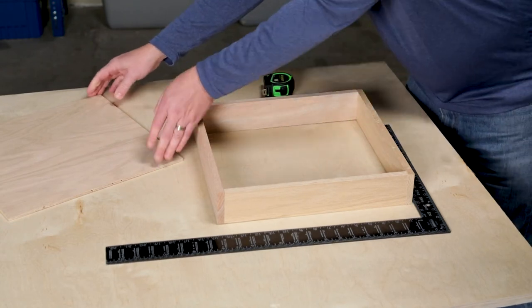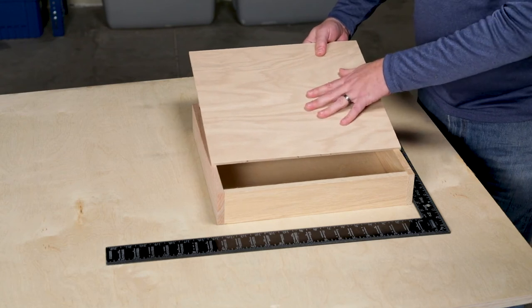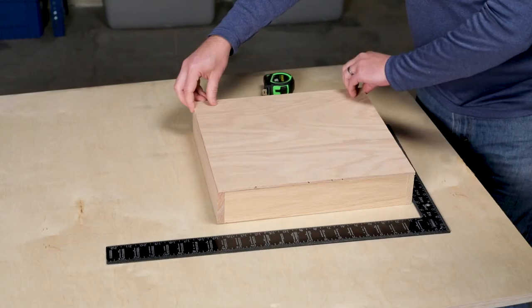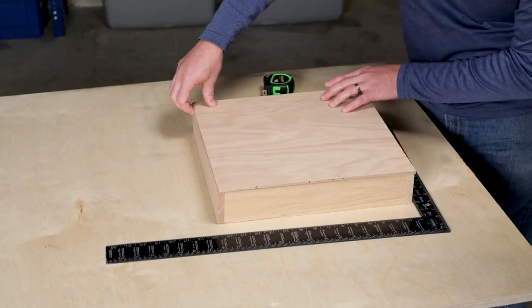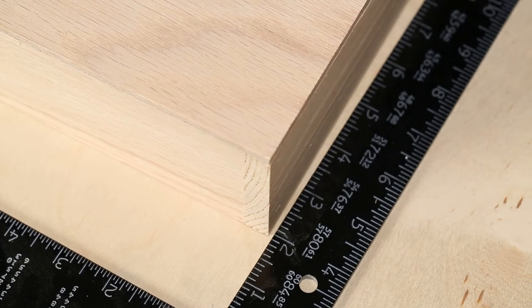Finally, you can use a piece that you already know is square. In this case, like the back for the shadow box. Just place it on and align it on one side, and then you can use it to help pull it into square as you put it together.